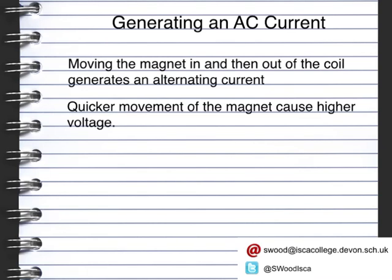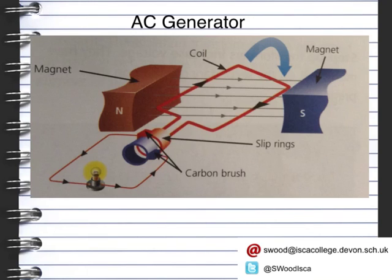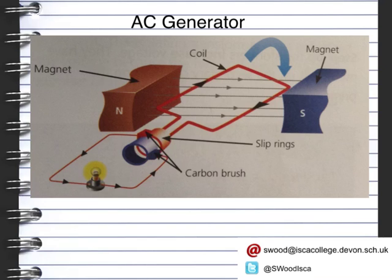Let's look at how an AC generator works. We have our magnetic field and a coil of wire going round. We need to ensure that the coil moves through the magnetic field. It works in a very similar way, but reversed, to a DC motor. This time we have slip rings in red and brushes in blue, which provide a constant supply of electricity as the coil moves around, changing the connection with the slip ring and the brush.